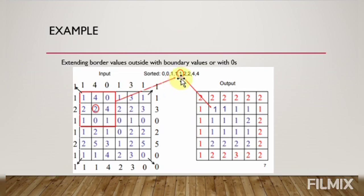For example, we have this 3x3 window having 9 values: 0, 0, 1, 1, 1, 1, 2, 2, 4. So the median value of these 9 values is 1, so we simply insert the 1 in the center of this window.